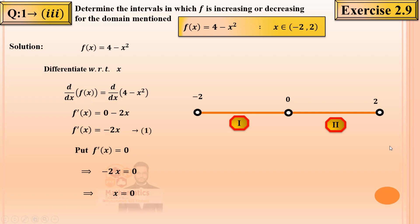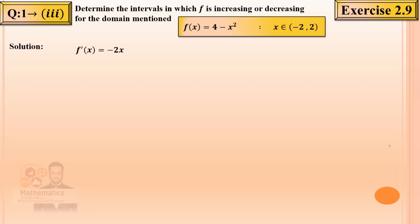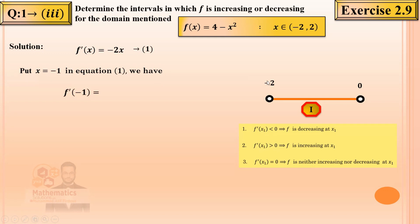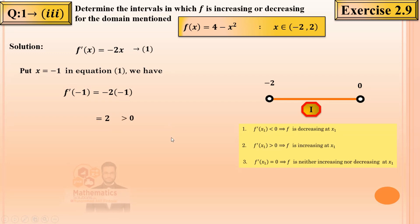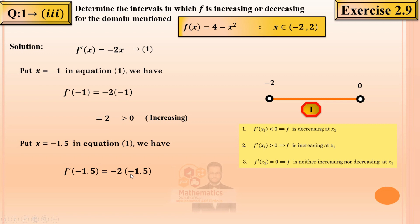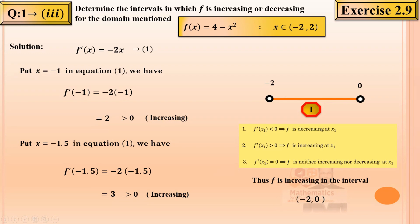For interval (-2, 0): choose x = -1. f'(-1) = -2(-1) = +2, which is greater than 0 — increasing. Choose x = -1.5: f'(-1.5) = -2(-1.5) = 3, also greater than 0 — increasing. So the function is increasing on (-2, 0).